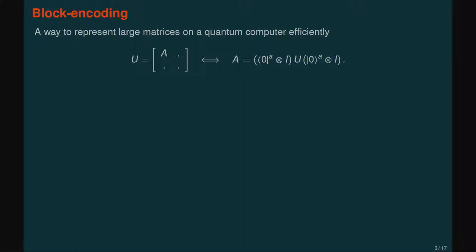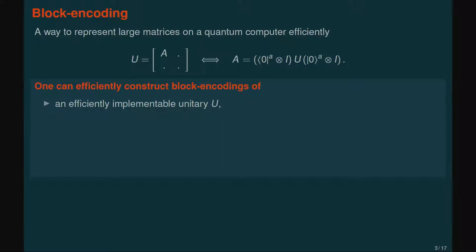A block encoding is a unitary matrix — a quantum circuit — which implements A in an operational sense, so that the top left corner is A. Suppose we set A ancilla qubits to zero, attach a state, apply the quantum circuit U, and post-select on the ancillas being in the zero state. Then the state we get out is proportional to A times the quantum state. It's really like a probabilistic implementation of a non-unitary matrix. A trivial example: any unitary matrix that can be efficiently implemented as a quantum circuit is a block encoding of itself.